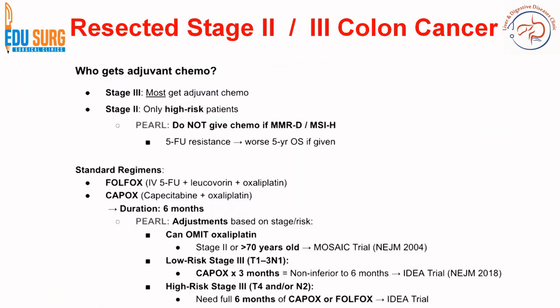If you have seen our previous video on trials on colon cancer, this is a very important slide to remember for managing patients with stage 2 or 3 colon cancer. In stage 3, the current recommendation is that almost all patients receive adjuvant therapy, whereas in stage 2, only high-risk patients get adjuvant therapy. Importantly, we do not give chemotherapy if the patient is MSI-high, as 5-FU resistance is present in these cases and chemotherapy can worsen 5-year overall survival.